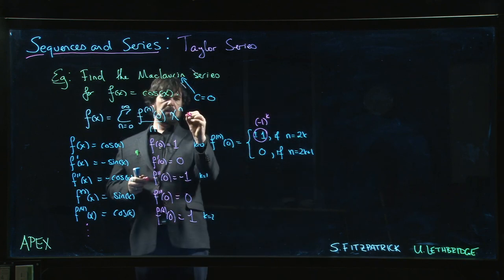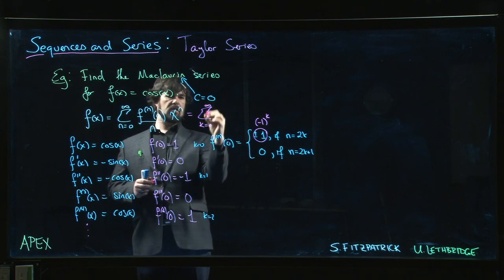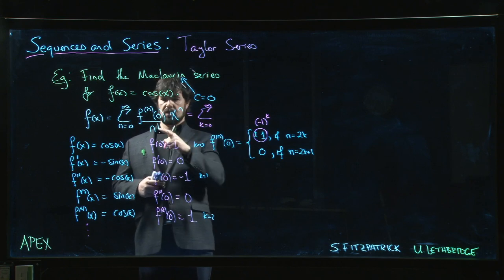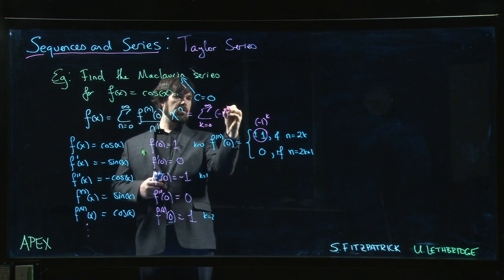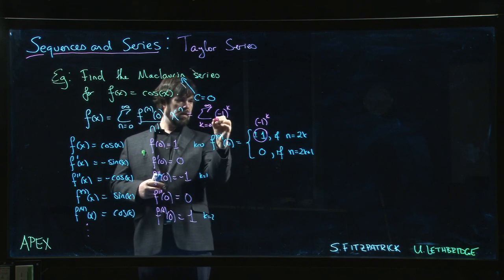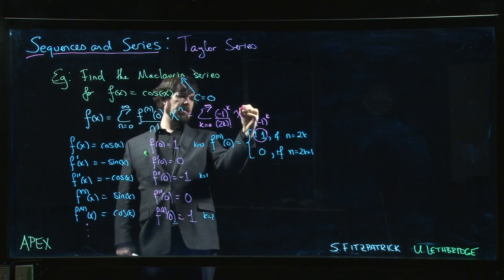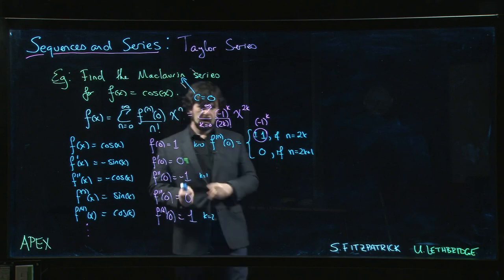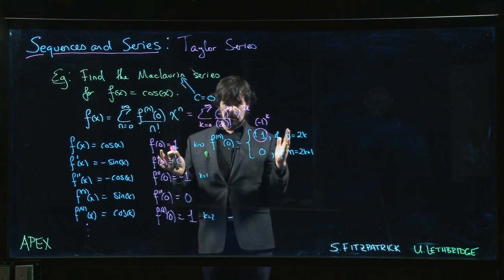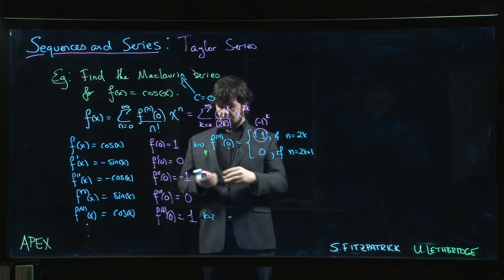And so what we can do is this. So we'll say k is going from 0 to infinity. And we're going to get, so the derivative is now just going to be minus 1 to the k over, now n, n is 2k, 2k factorial times x to the power of 2k. So here we see that only even powers are appearing in the series. Here's our sine factor. The factorial is still there. So we get it.